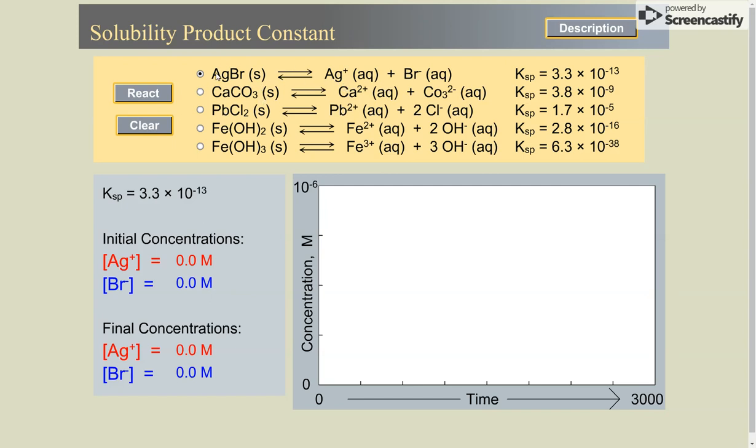So the first thing you need to do is compare the type of salt. This is silver bromide, it's an AB salt and so is calcium carbonate. So I can compare these two KSP values or KS values as we do here in New Zealand.